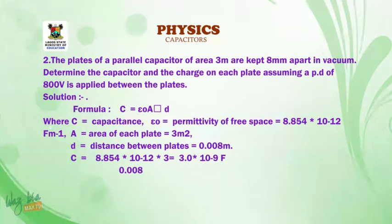Number 2. Activity 2. The plate of a parallel capacitor of a reactivity meter are kept 8 mm apart in vacuum. Determine the capacitor and the charge on each plate, assuming a PD of 800 volts is applied between the plate. Solution: You use the formula C is equal to epsilon A over D. Substitute the value of epsilon, the value of A, the value of D into the equation. If you do that, your C will become 8.854 times 10 to negative 12 times 3, all over 0.008 after converting 8 mm to meter, and that will give us 3.0 times 10 to negative 6 farad.